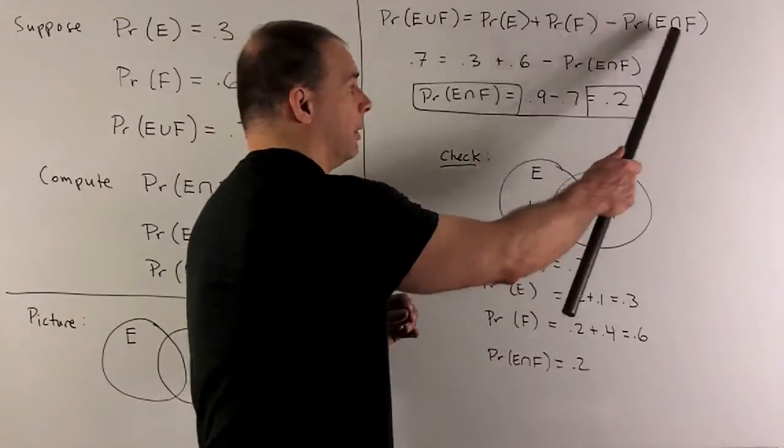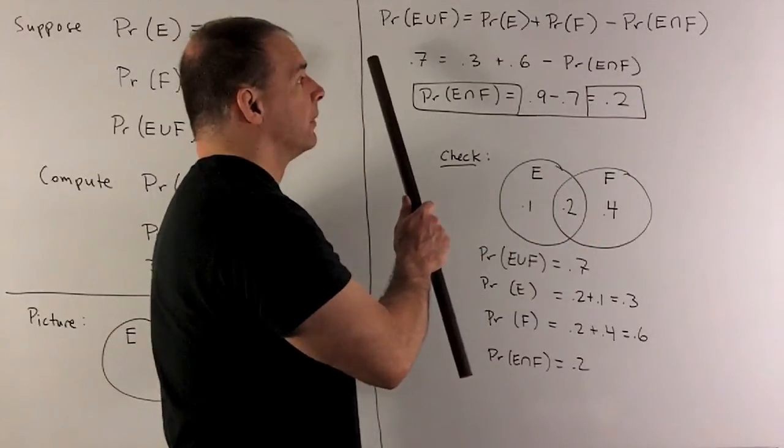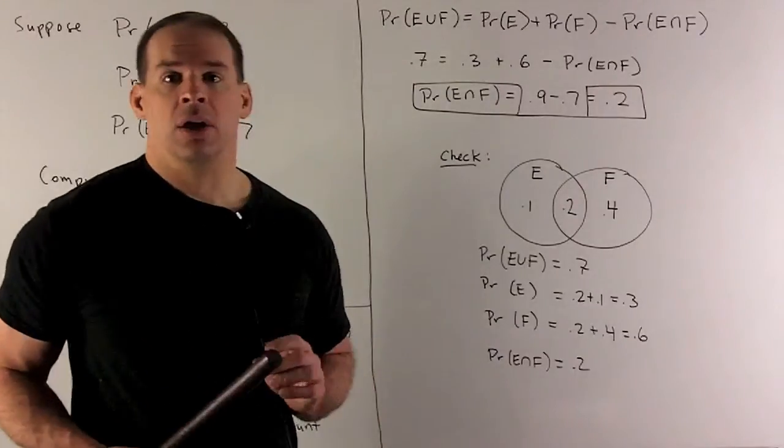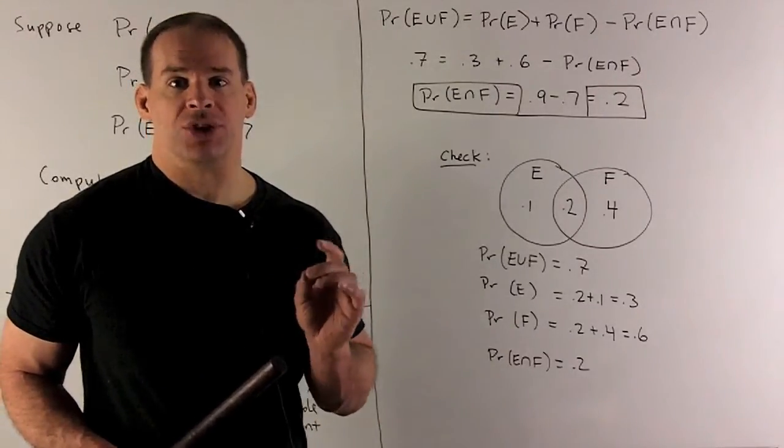Now, we'll move the probability of the intersection to the other side, and then I'll just move the 0.7 to that side. We solve, we get the probability of the intersection as 0.2.